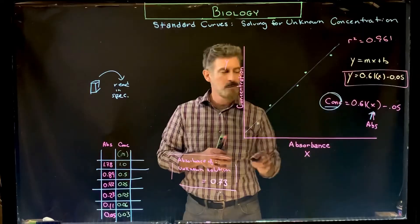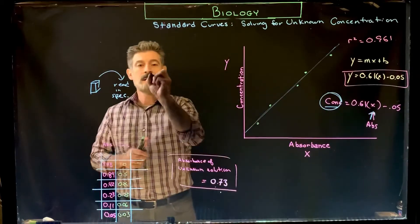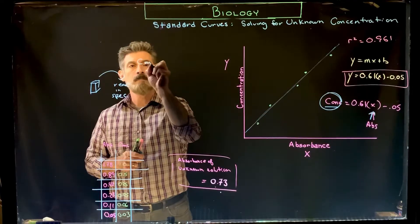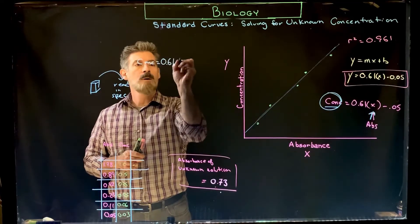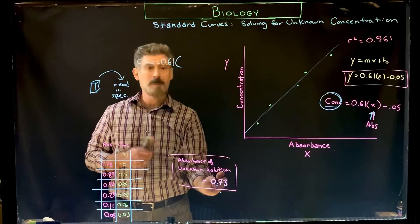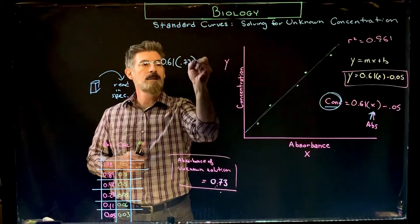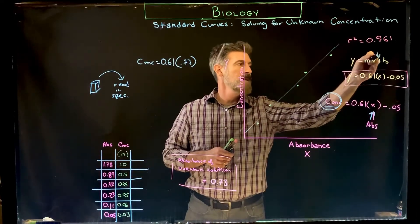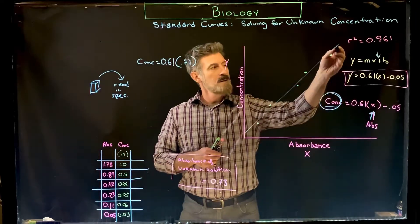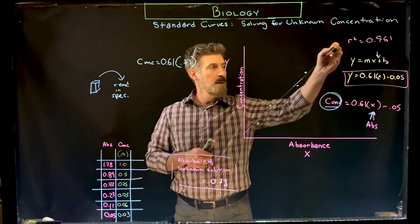In this particular example, we would say the concentration equals 0.61, and now this is the absorbance of my unknown, 0.73. In this equation, instead of plus b, it could be plus or minus. What that number represents is the y-intercept.